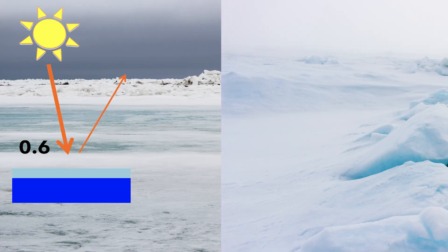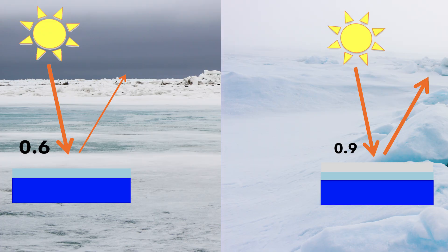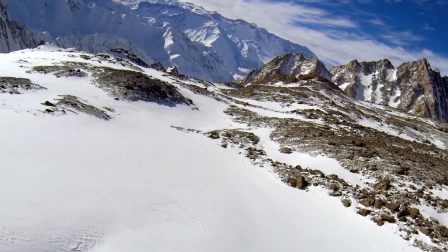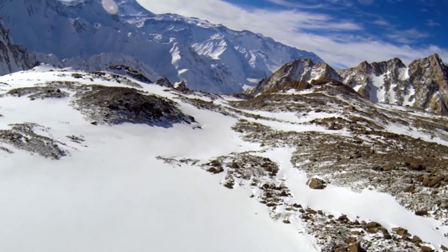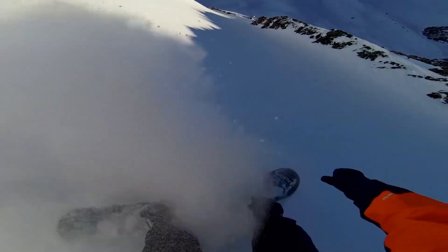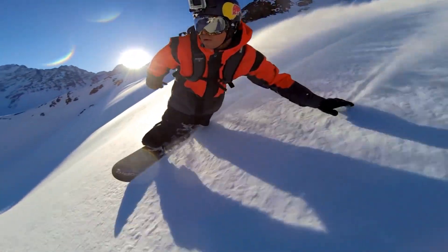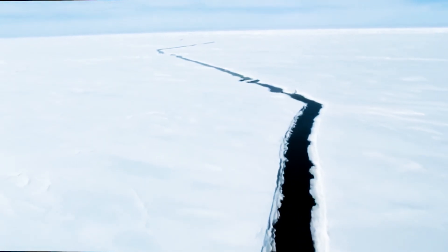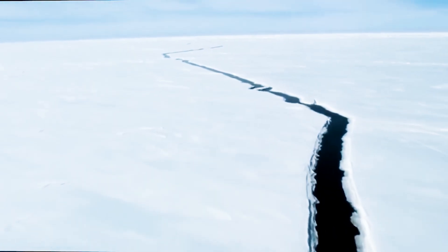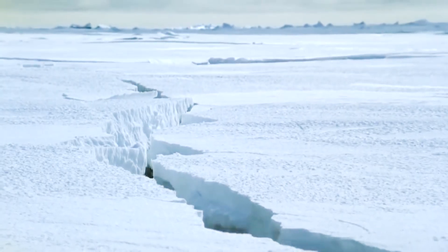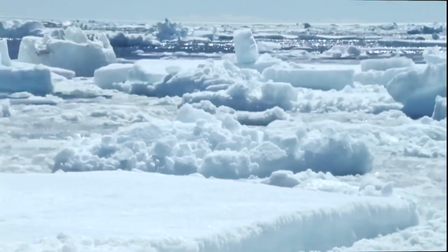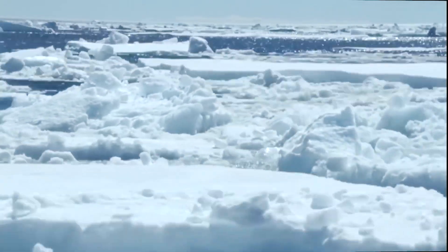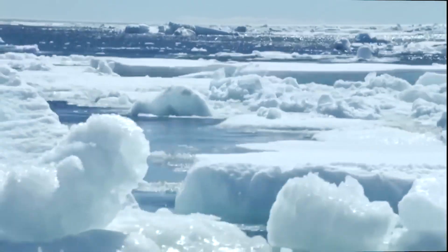Snow on top of the sea ice increases the albedo to 0.9. A lot of sunlight can get reflected from fresh snow, which is why you wear sunscreen and goggles when you ski or snowboard in Colorado. Snow and sea ice maintain a pretty high albedo for the Arctic surface, but that albedo changes as snow and sea ice cover change. Every year in the Arctic, snow and sea ice start melting in the spring and continue melting through the early fall.